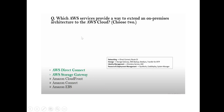Question: Which AWS services can be used to extend on-premises architecture to the AWS cloud? For networking, use AWS Direct Connect; for storage, use AWS Storage Gateway. Identity management uses Directory Service and IAM. Resource and deployment management uses CodeDeploy and Systems Manager. So select Direct Connect and AWS Storage Gateway.